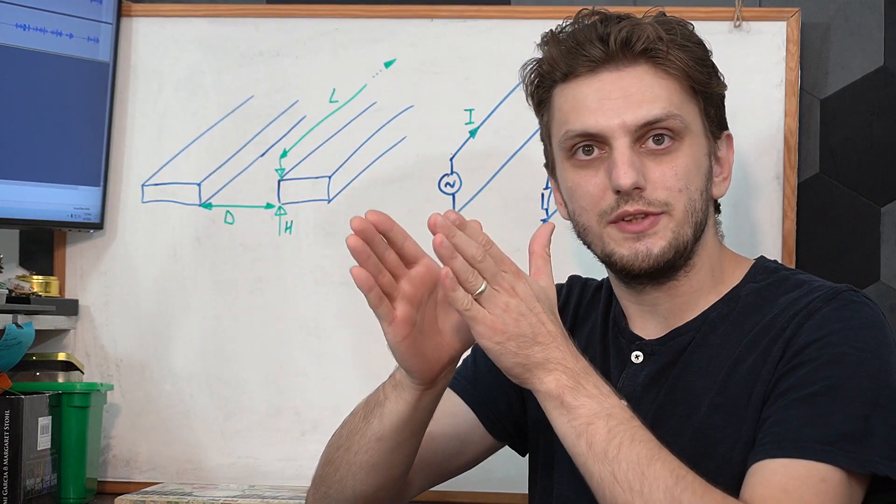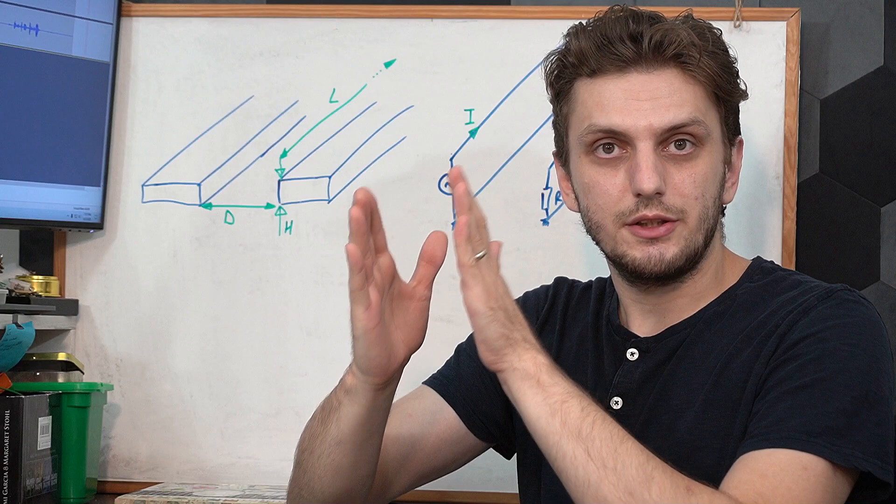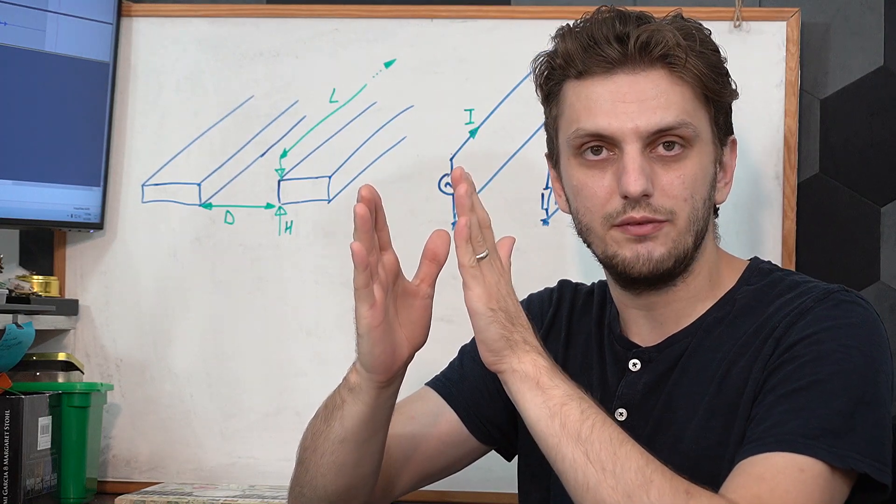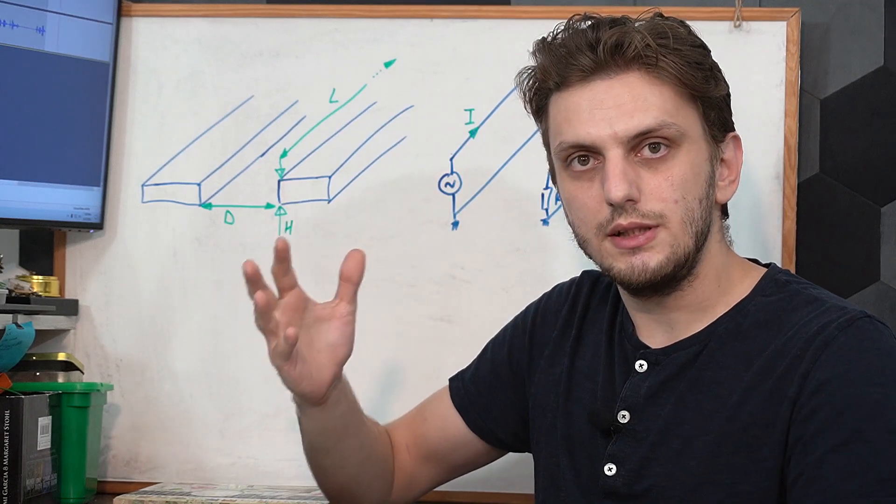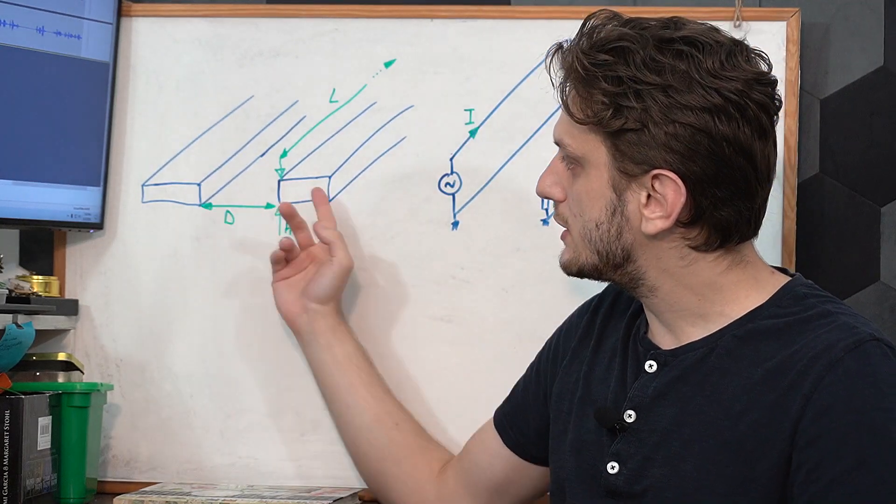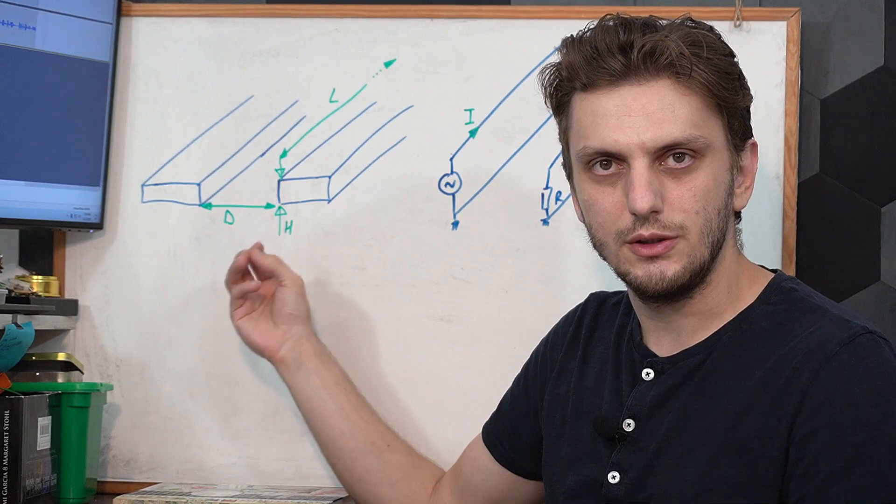And since the two surfaces are separated by a certain distance, basically we have a parallel plate capacitor. So part of the signal is coupling through electrical fields through the capacitance in between the two traces.